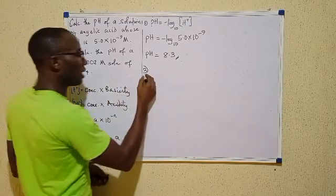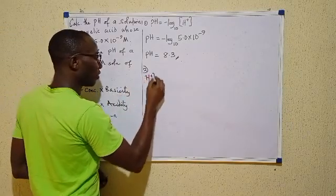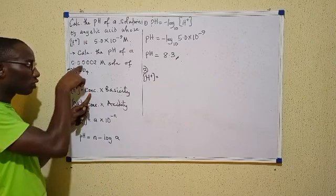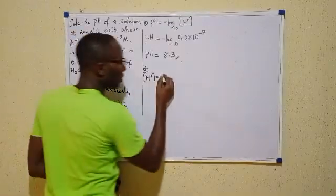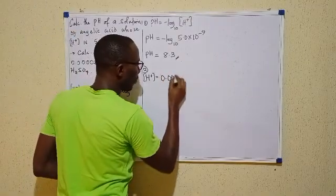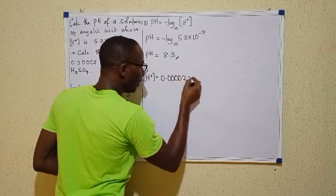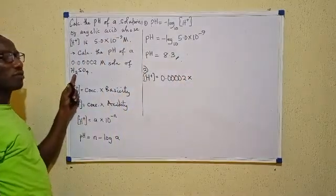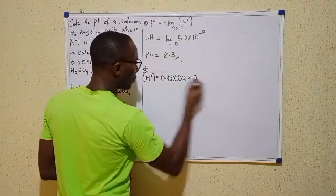So let's use this first formula. I'll say H+ concentration for this acid solution equals the concentration of the acid given to me, which is 0.402 times the basicity, number of replaceable hydrogens for H2SO4, and that is 2.